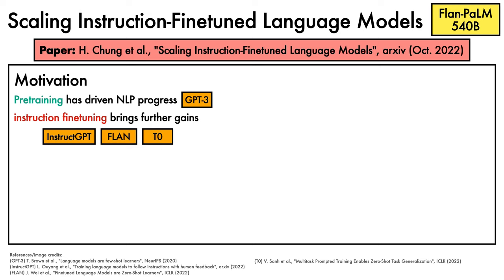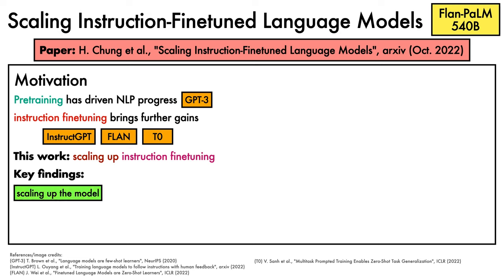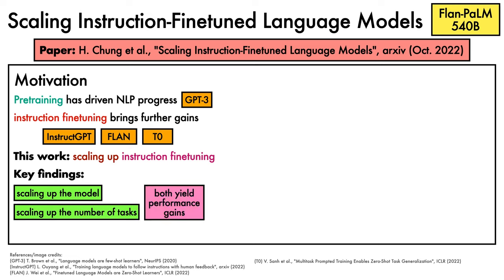Given these results, the core focus of this work is to study the process of scaling up instruction fine-tuning to better understand its effectiveness. The key findings are that scaling up the model size and scaling up the number of tasks both continue to yield performance gains, suggesting that further scaling remains a viable strategy for improving performance. It also finds that including a small number of chain-of-thought tasks in the fine-tuning mixture is useful for boosting all-round performance.